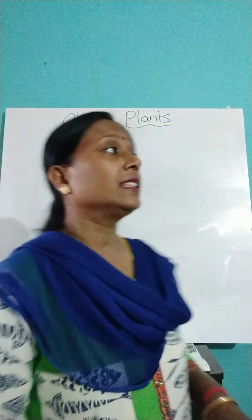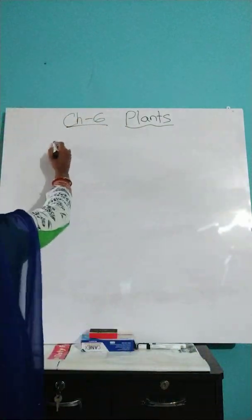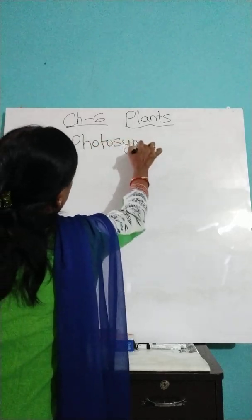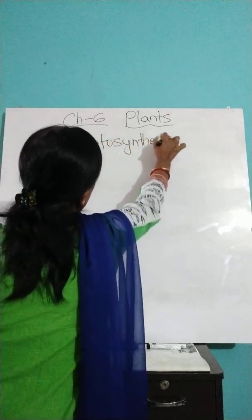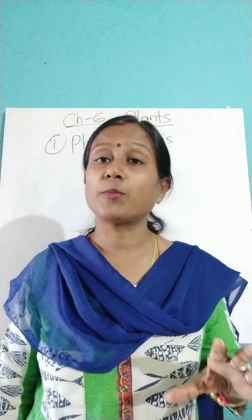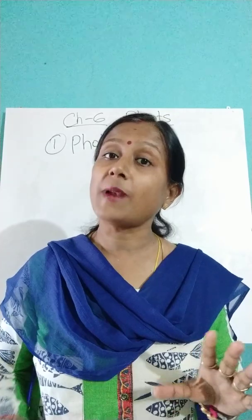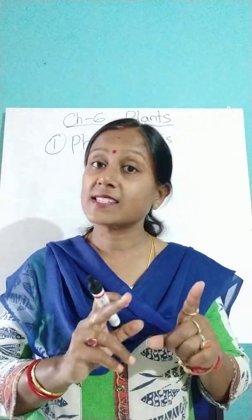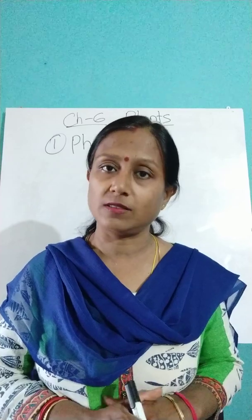Let us first see how food preparation takes place. The process by which plants prepare food is known as photosynthesis. Photosynthesis is the process by which plants prepare food in the presence of sunlight and chlorophyll, with the help of carbon dioxide and water.